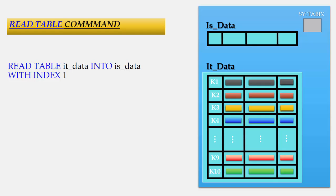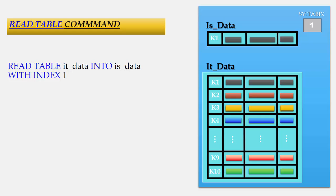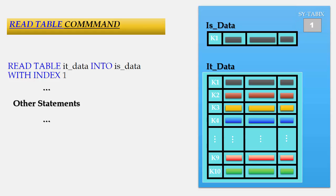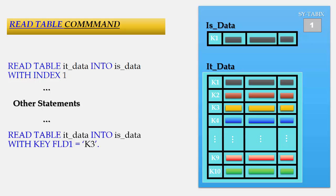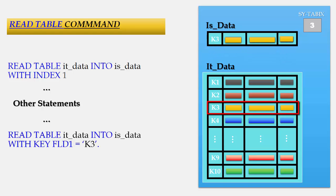Next is the READ TABLE command. Its syntax is: READ TABLE it_data INTO internal structure is_data WITH INDEX 1. So we are reading the first record into our structure variable. Right now SY-TABIX is blank. After executing this statement, the value is moved into our work area and SY-TABIX is set to 1. In another example, READ TABLE with KEY field1 EQUAL TO k3 reads the record with key k3 — which is highlighted in yellow — into our work area, and SY-TABIX is set to 3.